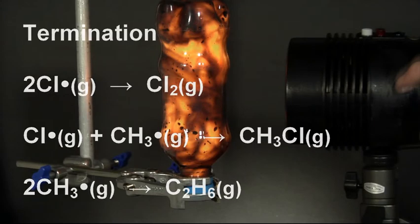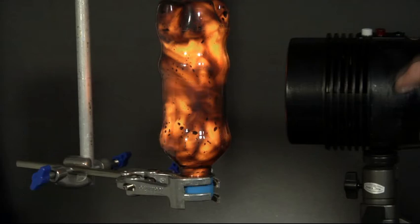Chlorine molecules form atoms or radicals when exposed to bright sunlight. In this demonstration, the flash gun provides sufficient energy to break the chlorine-chlorine bonds homolytically.